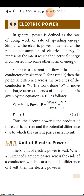Thus the electrical power is the product of potential difference and the current passing through the circuit. Whenever in physics we are studying a definition, for that we will be having a formula and also the unit.